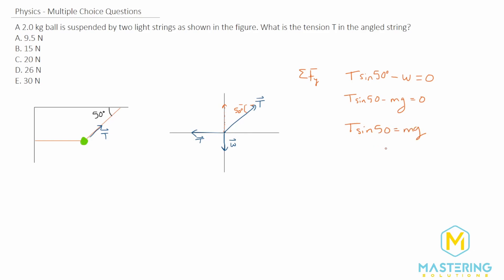To find T, we isolate it by dividing by sin 50. So T equals mg divided by sin 50 degrees.